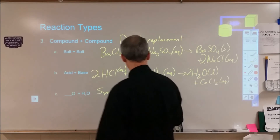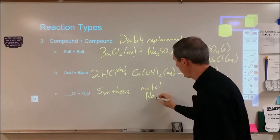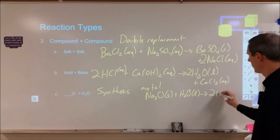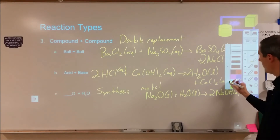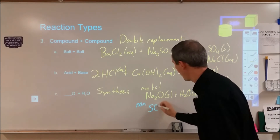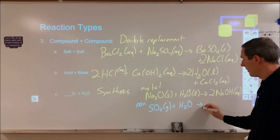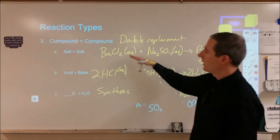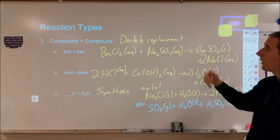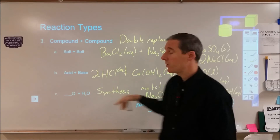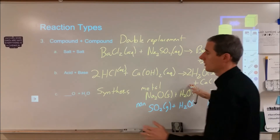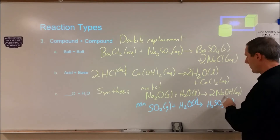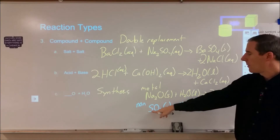If the compound is a metal oxide, like sodium oxide, and you add it to water, you're going to make a base. On the other hand, if you have a non-metal oxide, like sulfur dioxide, and you add that to water, you're going to make an acid. So if you see compound plus compound, you're probably looking at double replacement — but if you run into this exception and realize switching the oxygens out doesn't make sense, recognize that it's the synthesis exception. From there, you'll either make a hydroxide or an acid depending on whether you started with a metal or non-metal oxide.